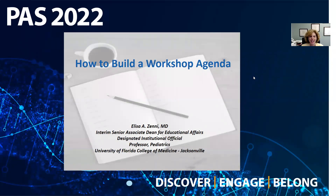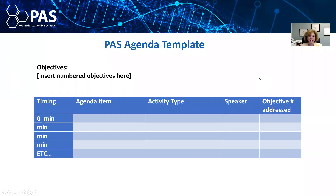Hi, I'm pleased to talk with you today about how to build a workshop agenda. PAS has created this nice workshop agenda template that allows you to think about each agenda item you want to cover in your workshop, what type of learning activity is best for that agenda item, how much time you will need, which facilitator will lead that portion of the agenda, and it also helps you link your learning objectives to your learning activities.